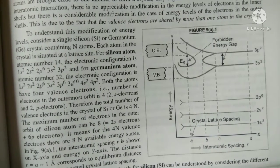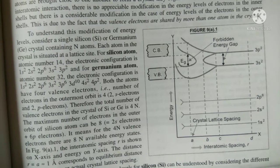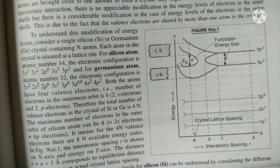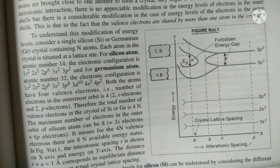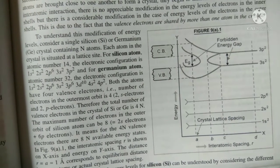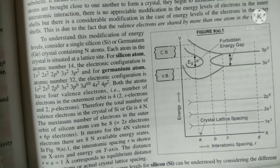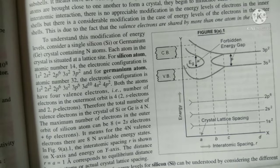To understand this, consider a single silicon crystal containing N atoms. For silicon atom having atomic number 14, the electronic configuration is 1s2, 2s2, 2p6, 3s2 and 3p2 and it have 4 valence electrons.